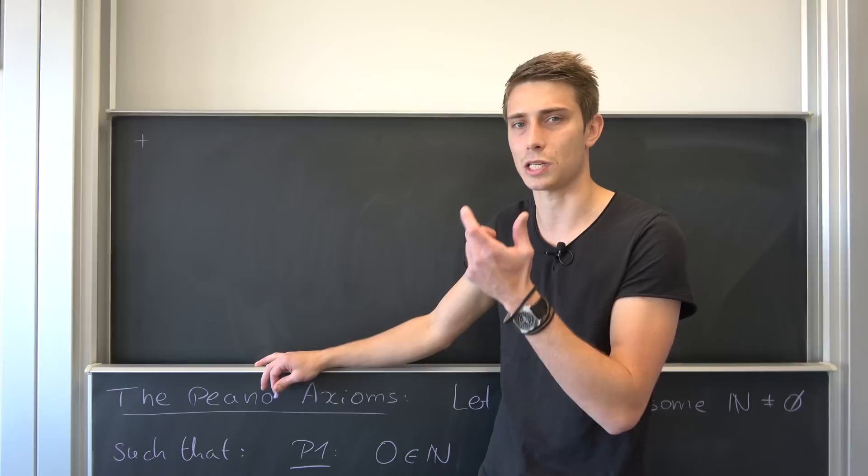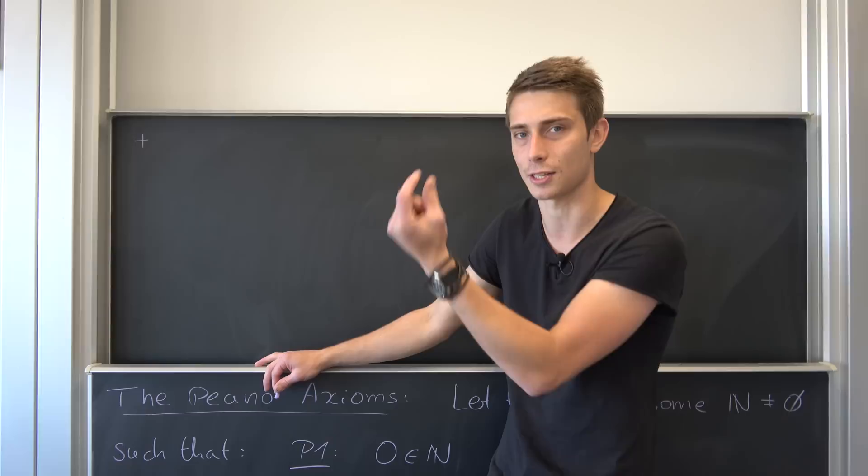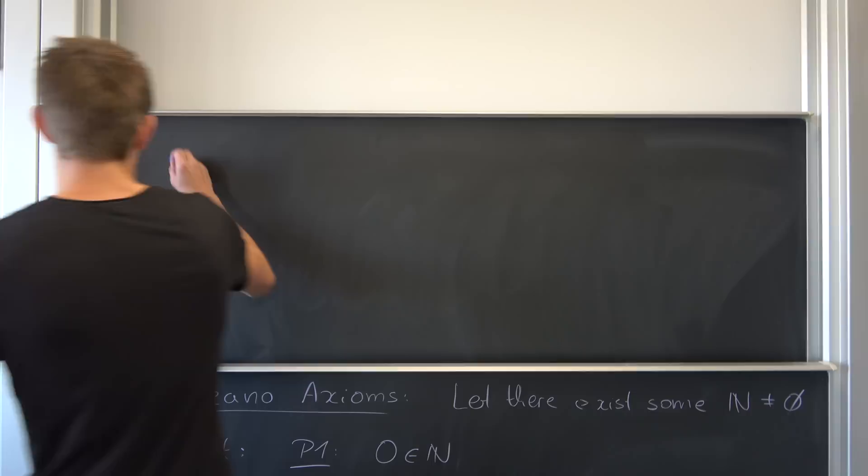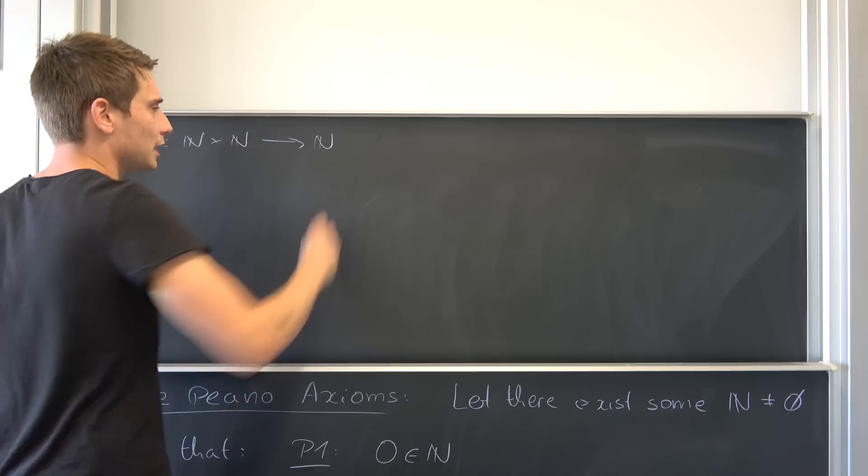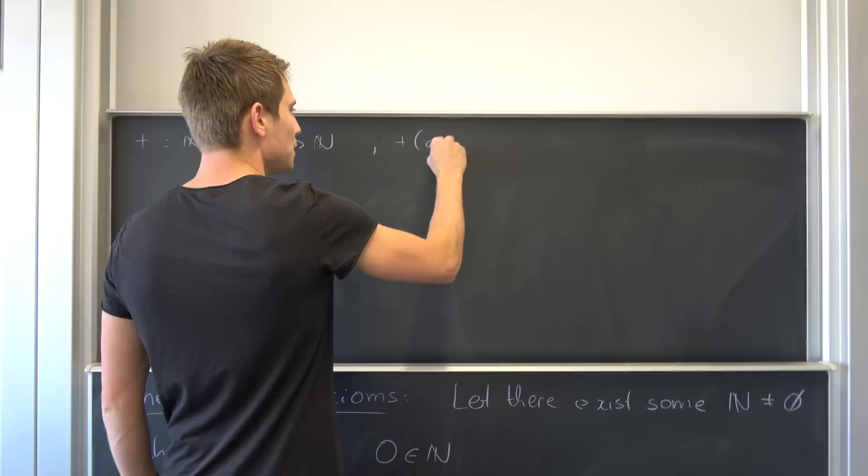Let's say we have an operation plus, and if you have watched my set theory video, well, you know that we just take two elements in the Cartesian product, so natural numbers Cartesian product with natural numbers and map it to a single element. So, natural numbers in Cartesian product with itself, mapped to a single element. How can you rewrite this?